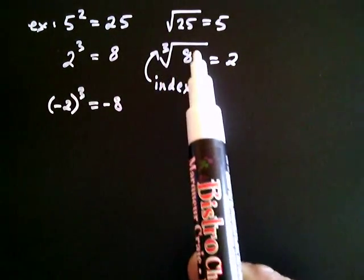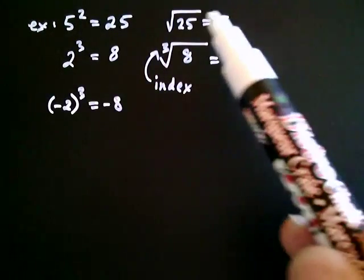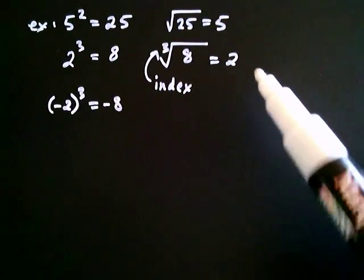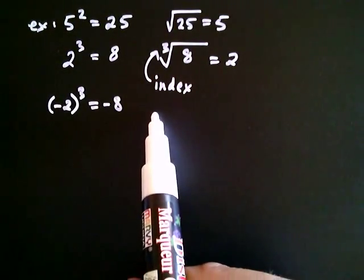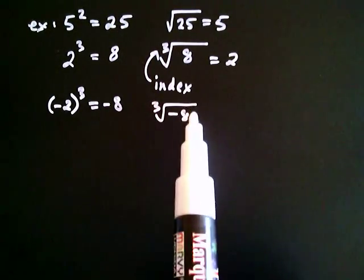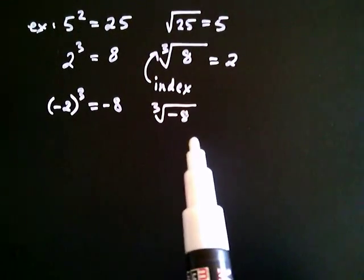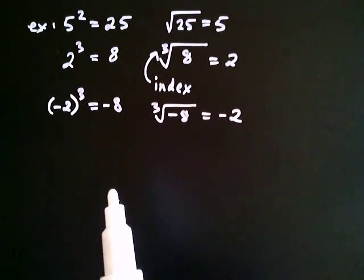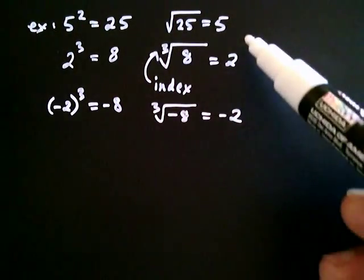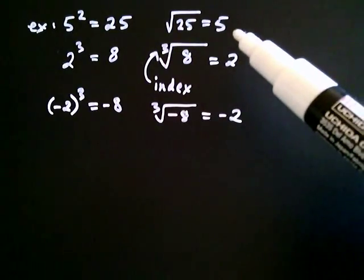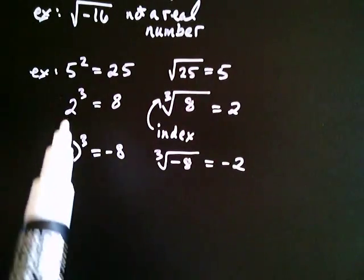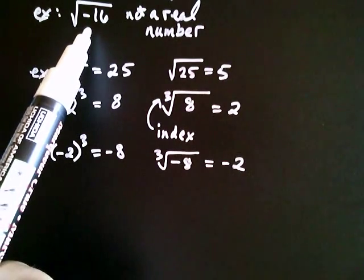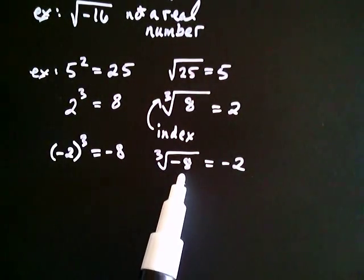Two is the only number you cube to get eight, so the cube root symbol does not always denote a positive like the square root does. In fact, the cube root of negative eight is the number you cube to get negative eight — and there is such a real number: negative two. So we see an important difference: with square roots, you cannot have a negative radicand, but with cube roots, you can have a negative radicand.